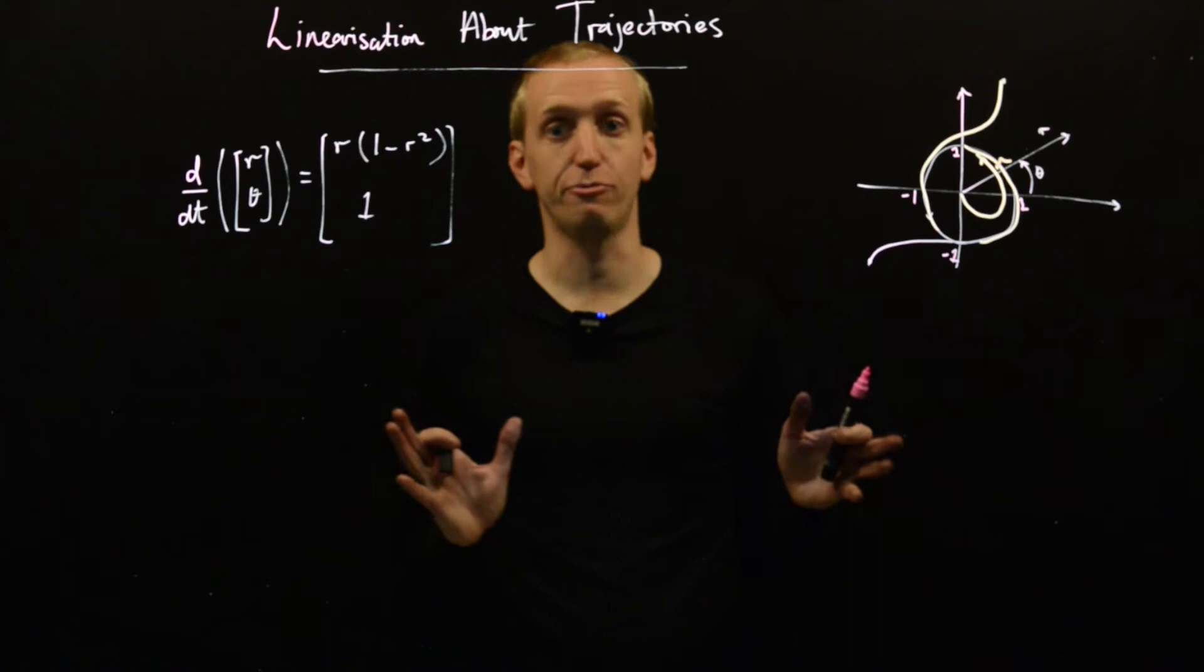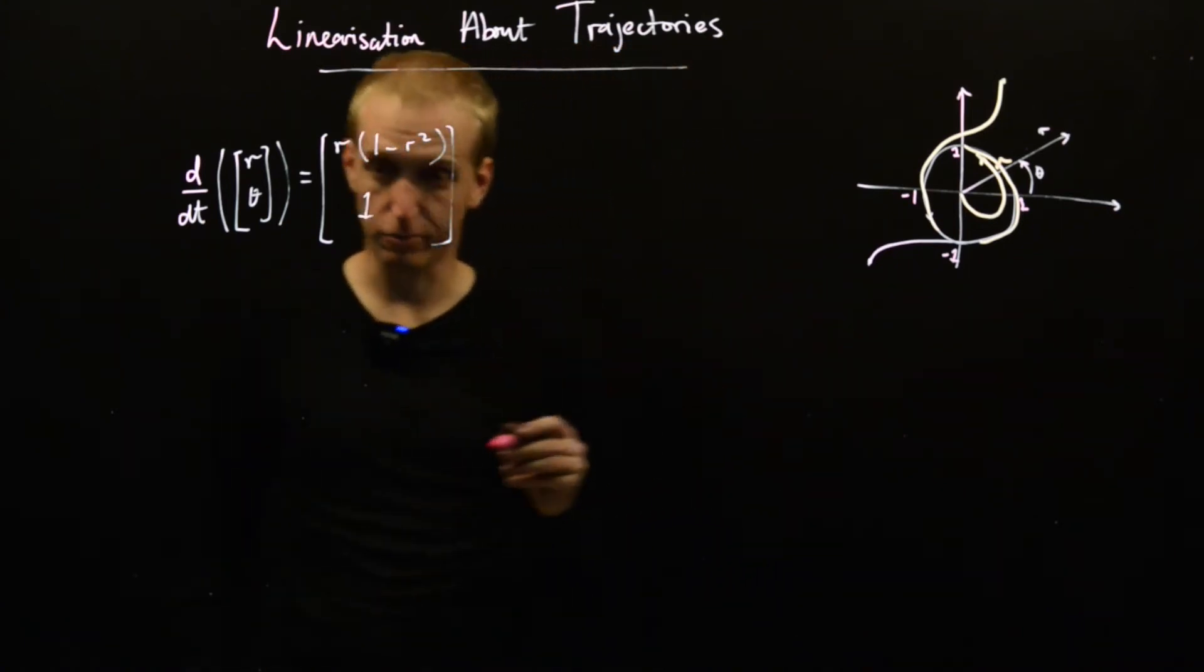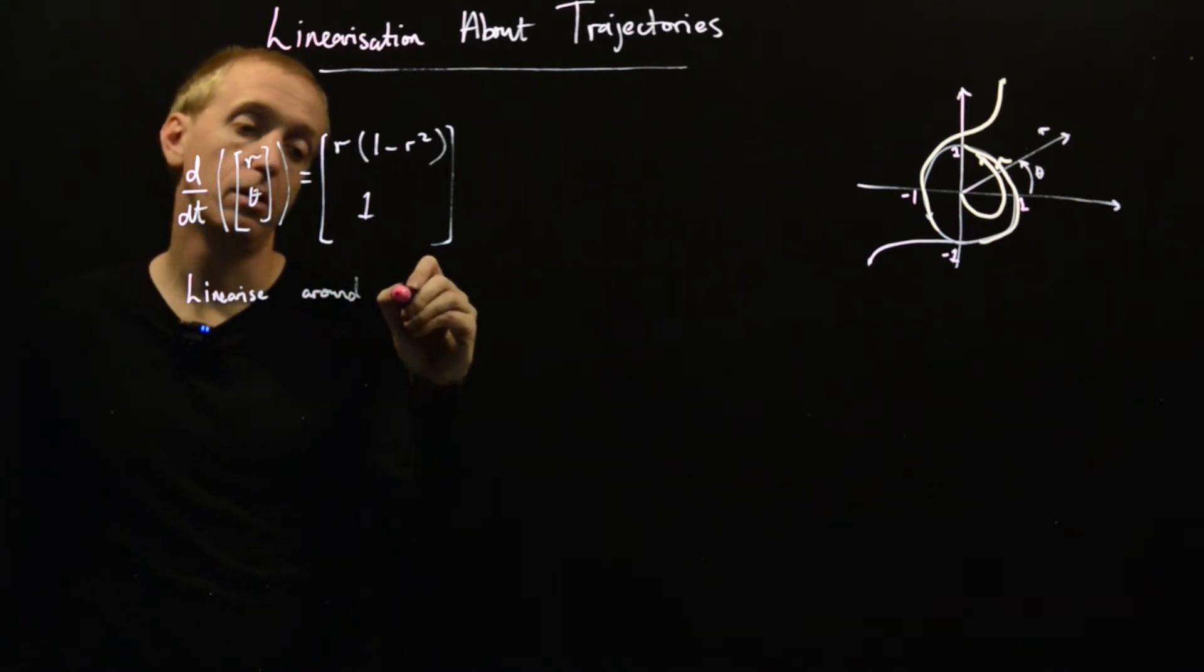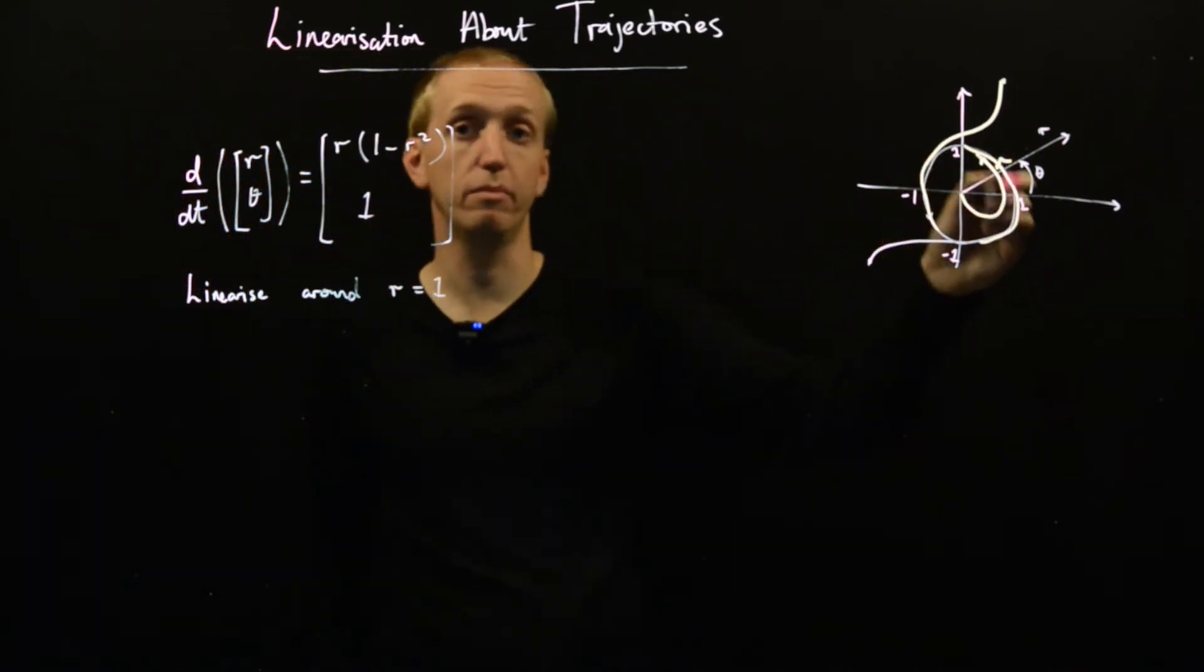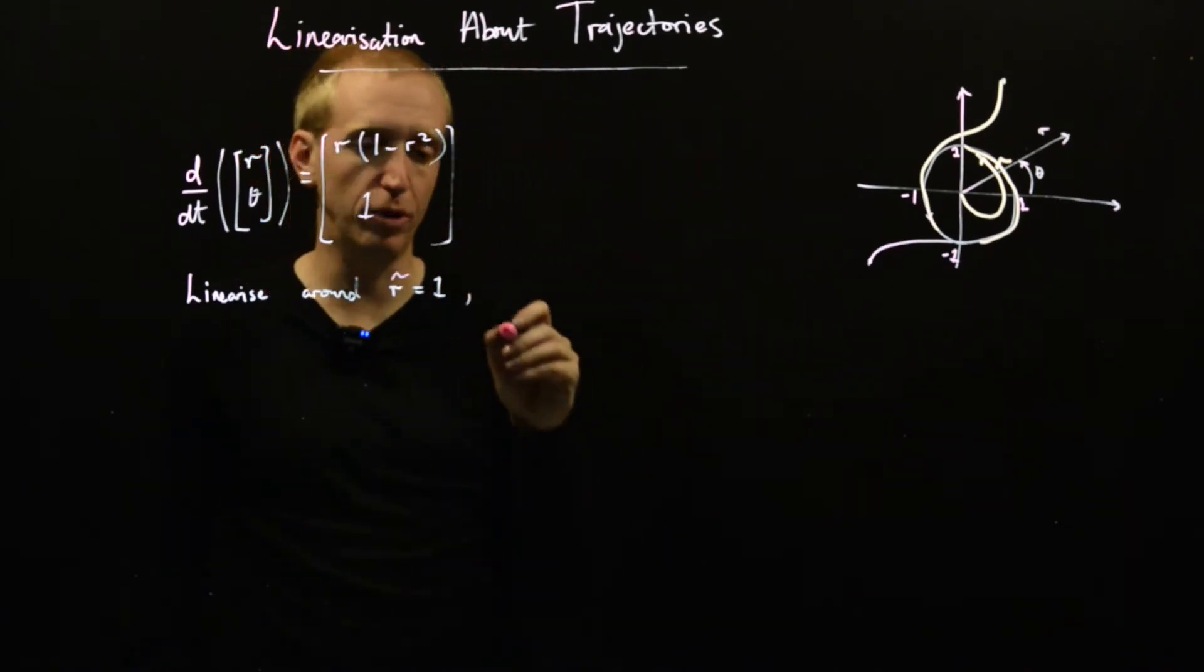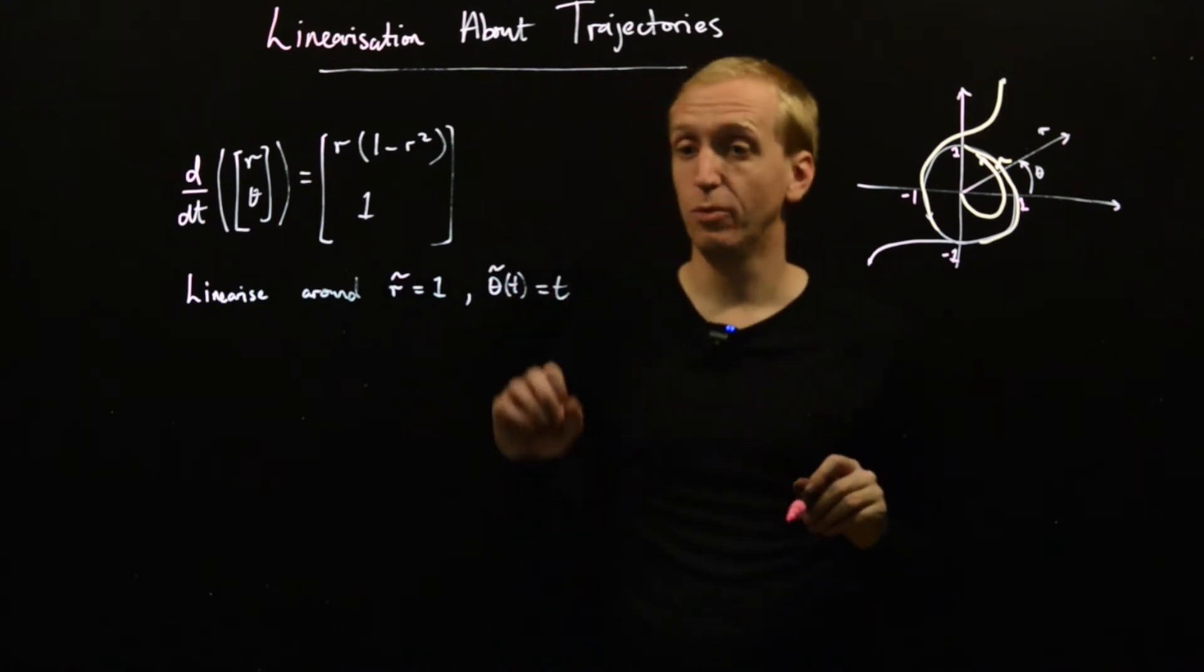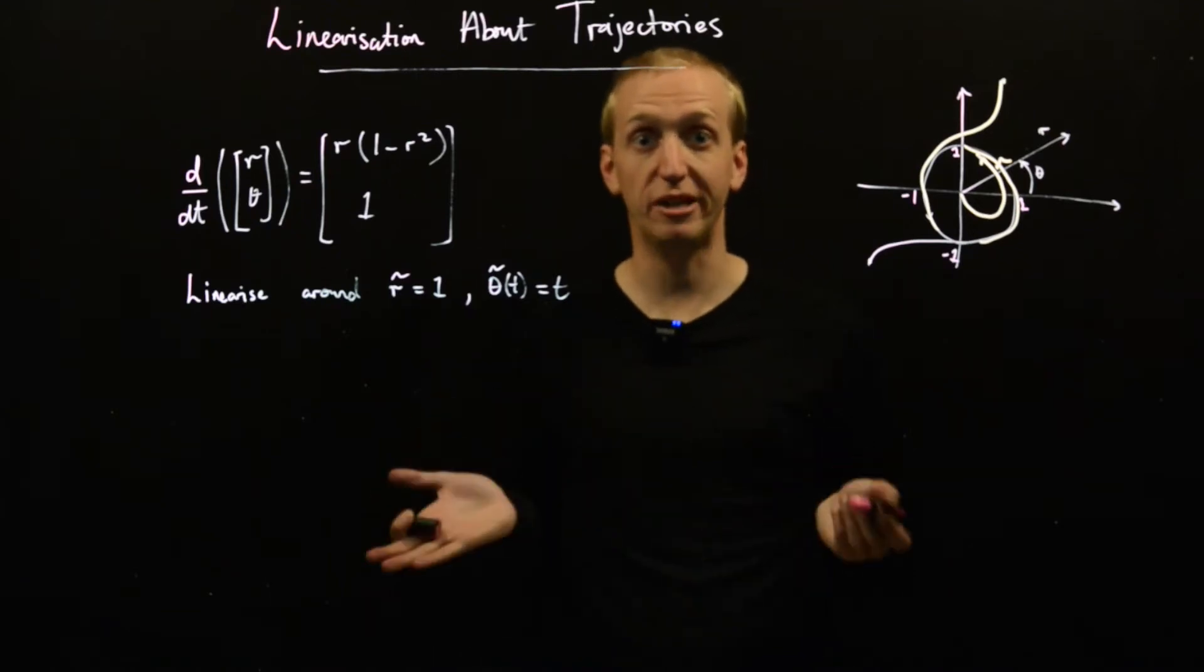Let's try and linearize around that limit cycle and see what happens. We're going to linearize around r equals 1, so the limit cycle is on the unit circle with radius equal to 1. What should we put for our equilibrium trajectory for theta? Let's just guess t. Is this a sensible guess? To know whether it is or not, we need to substitute into our differential equation and see if it is a solution.